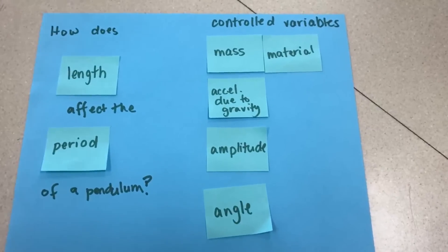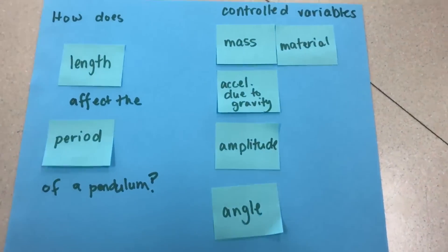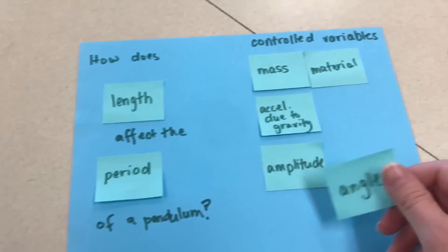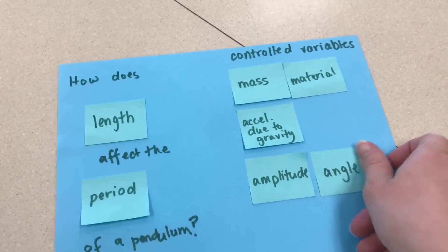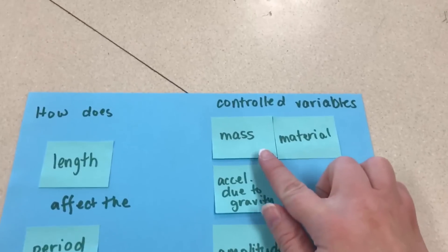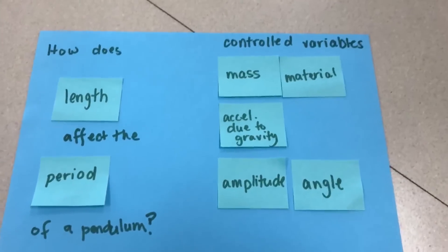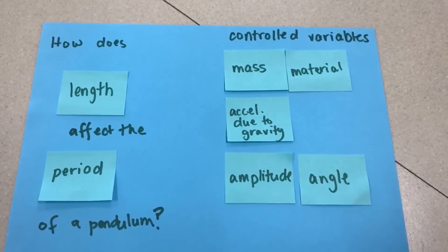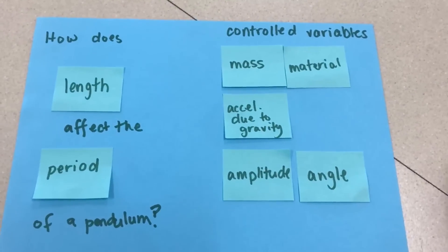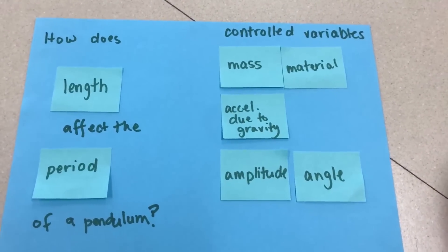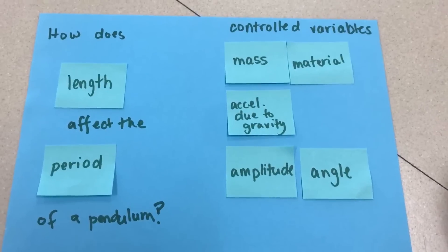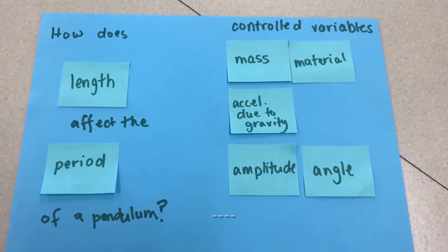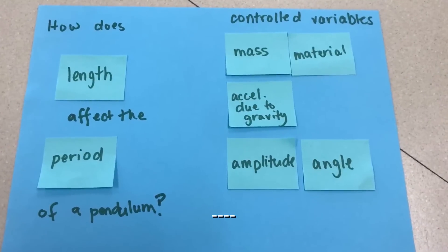When students are organizing these, they'll probably recognize that amplitude and angle really mean the same thing here. And if we're keeping the mass controlled, we can also control the material by keeping the same pendulum bob attached. How would we keep the acceleration due to gravity equal? Well, let's not go to another planet. And then students would brainstorm how to keep the amplitude or the angle equal, so pulling back the same amount each time.